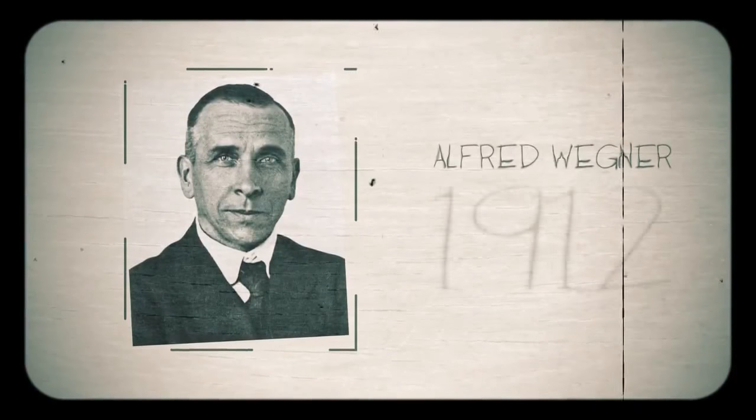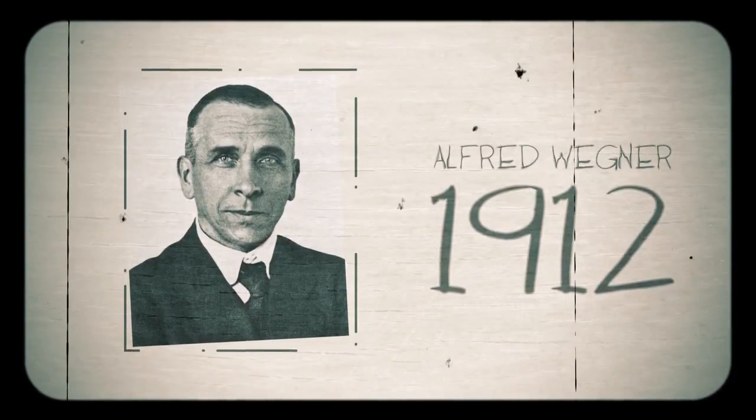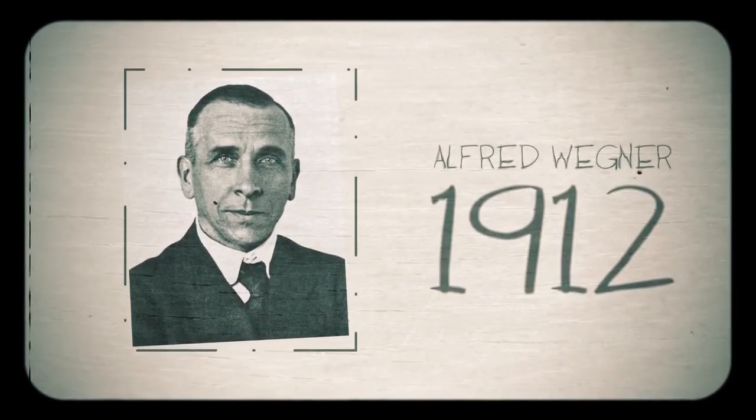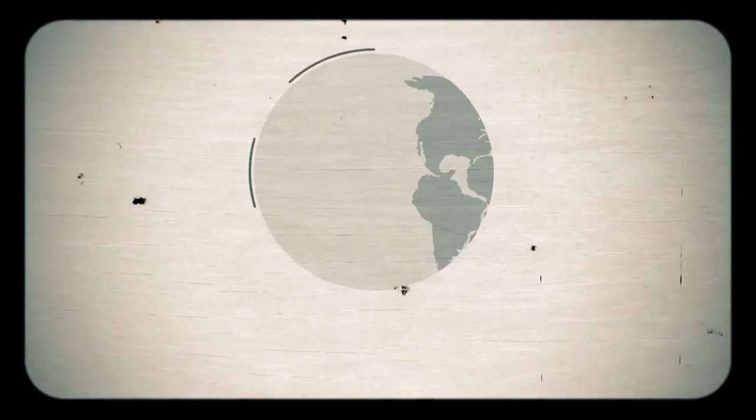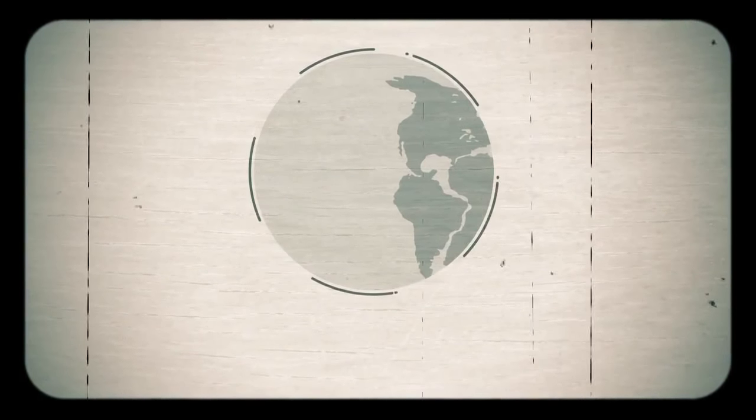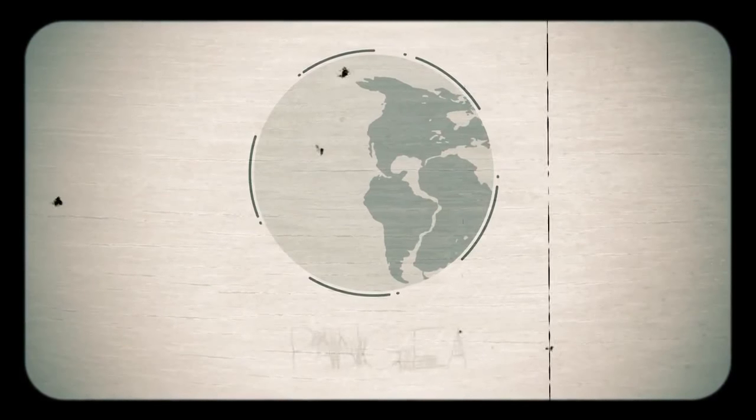Alfred Wegener proposed a theory in 1912 that the great continents of the earth had drifted over geological time and were once all joined together in a giant land mass we now call Pangaea.